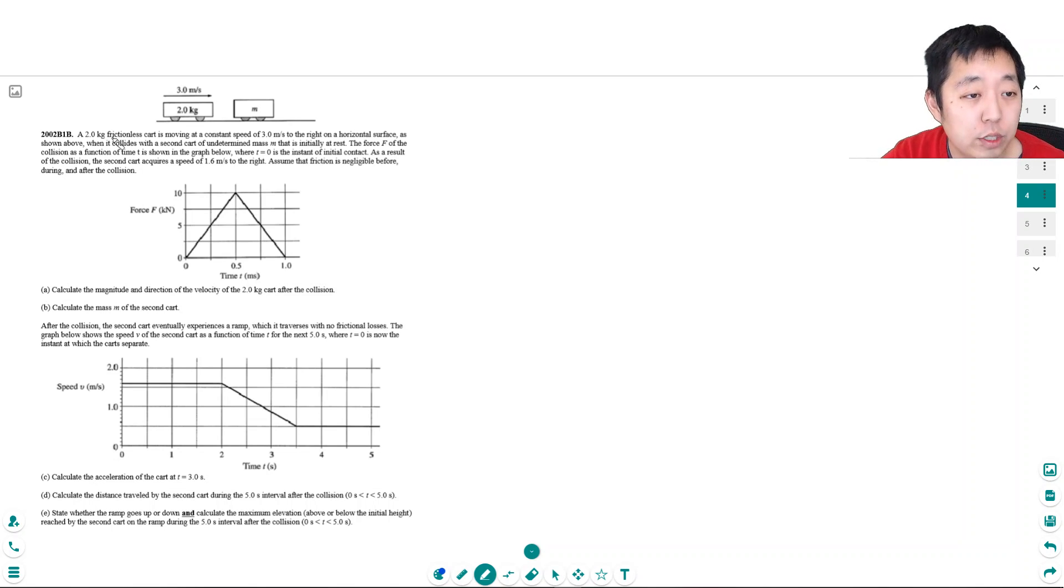A two kilogram frictionless cart is moving at constant speed three meters per second to the right on a horizontal surface when it collides with a second cart of undetermined mass that is initially at rest. The force F of the collision is a function of time shown in the graph below, where t is the instant of initial contact. As a result of the collision, the second cart acquires a speed of 1.6 meters per second to the right.